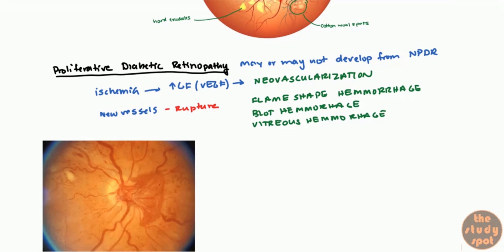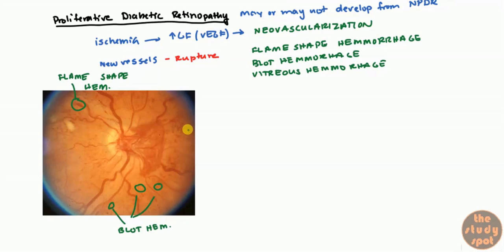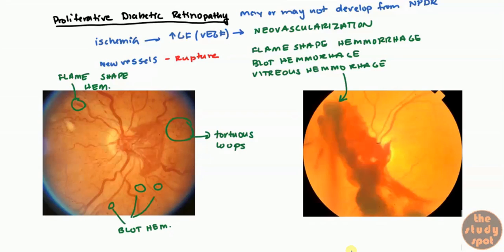If it's very severe, you can get a vitreous hemorrhage — hemorrhaging into the actual vitreous fluid. Here is a flame-shaped hemorrhage, which looks kind of like a little flame. And these three little pinpoint findings are known as blot hemorrhages. You can also see very tortuous vessels, which is another sign of proliferative diabetic retinopathy. The whole area here showing blood throughout is a vitreous hemorrhage — blood is leaking into the vitreous, which is now going into the actual vitreous area rather than within the retina.